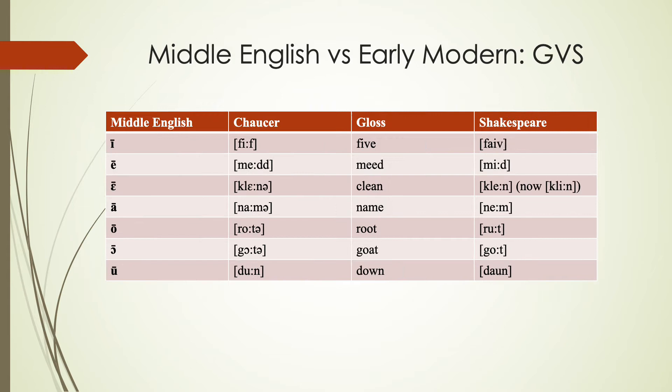We can see a notable change comparing some Middle English words to Early Modern English after the Great Vowel Shift. 'Fif' from Chaucer would have become 'five' from Shakespeare, with the final sound becoming voiced and the vowel changing. 'Med' becomes 'need,' 'clena' becomes 'clean' — and during Shakespeare's time would have been more like 'clane.' 'Nama' becomes 'name,' 'rota' becomes 'root,' 'gota' for goat becomes 'goat,' and 'dune' for 'down.'